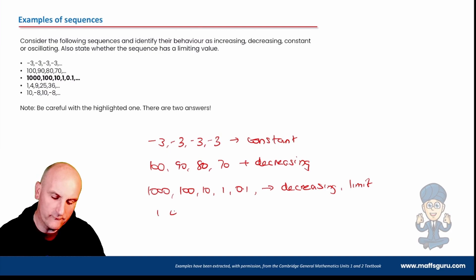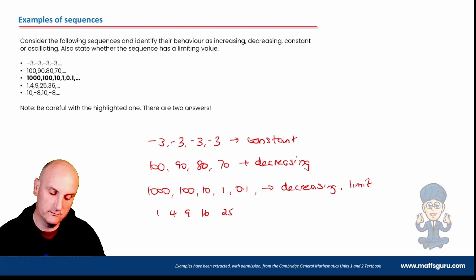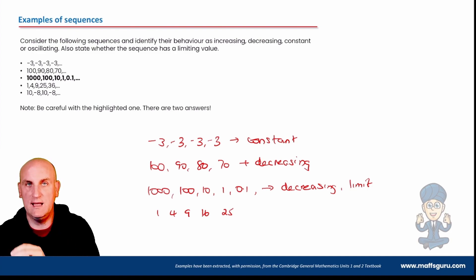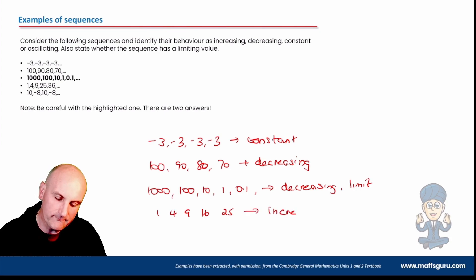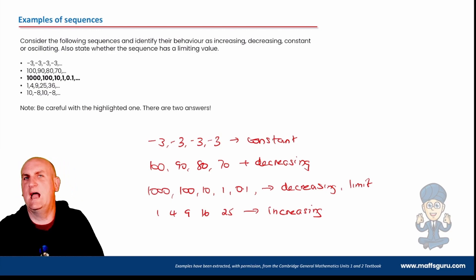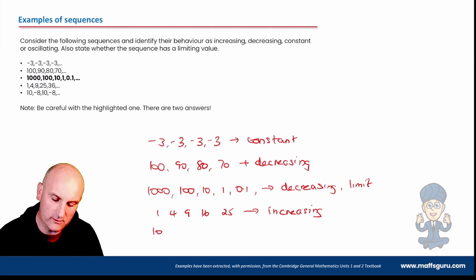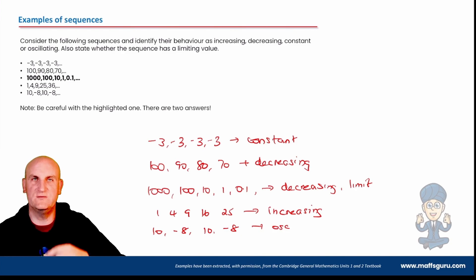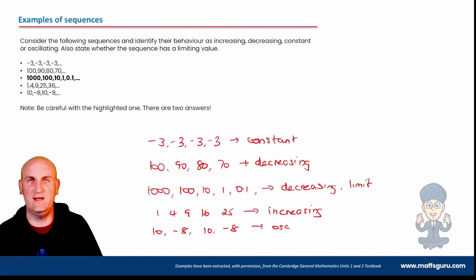What about 1, 4, 9, 16, 25? Those are the square numbers and they are going to continue to get bigger and bigger — so that is increasing, with no limit, going to infinity. And the values 10, minus 8, 10, minus 8 — that situation is going to oscillate. Is it going to have a limiting value? Not really, because if it oscillates between two values, it's never going to end up at one particular value.